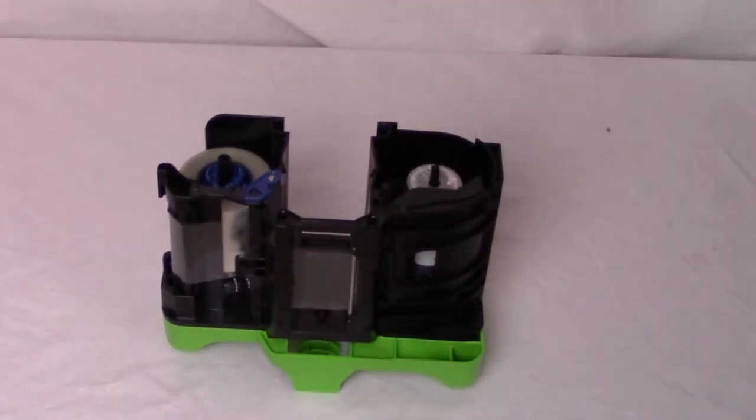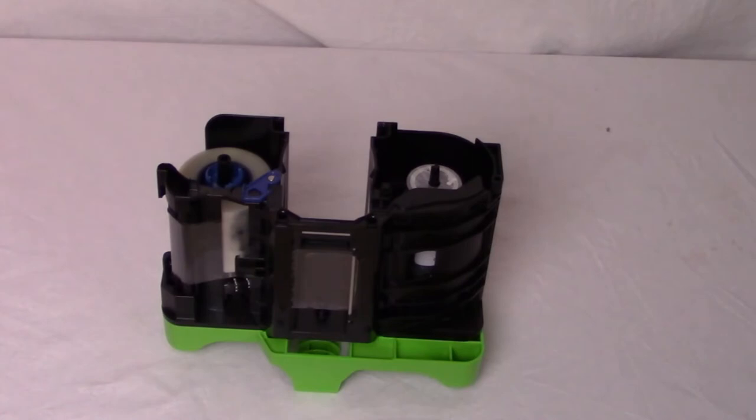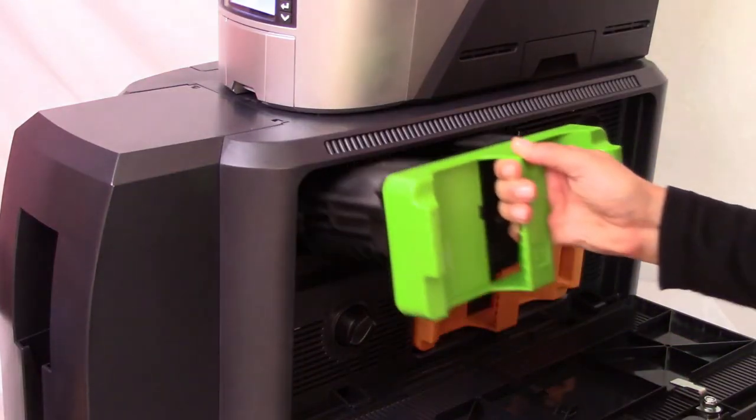Close the laminator cartridge gate. Make sure that the overlay material runs between the guides on both the take-up and supply sides of the cartridge. Replace the loaded cartridge in the printer.